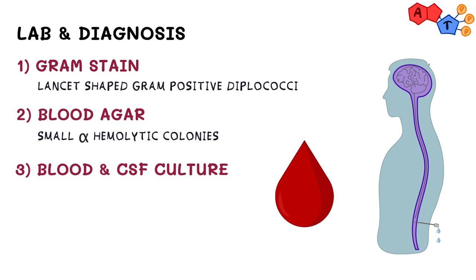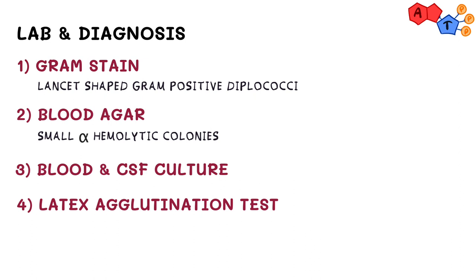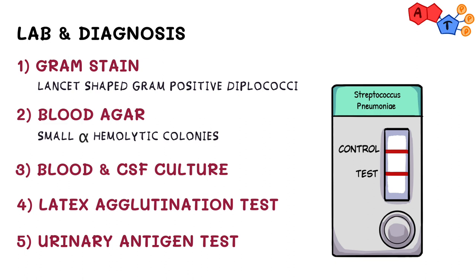There are some rapid tests that can detect streptococcus pneumoniae, including latex agglutination tests that detect the capsular polysaccharide in the CSF of patients with pneumococcal meningitis. Another rapid test is the urinary antigen test which can detect pneumococcal antigens in patients with pneumonia and bacteremia.